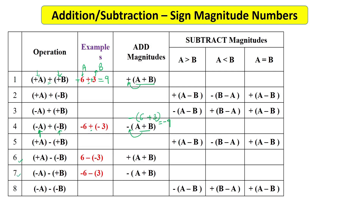For cases six and seven, we still add the magnitudes. In case six, subtracting plus A and minus B — for example plus six and minus three — you compute six plus three and the result sign is positive, giving plus nine. This aligns with normal mathematics. In case seven, subtracting minus A and plus B, you again compute A plus B but the result sign is minus, giving minus nine.